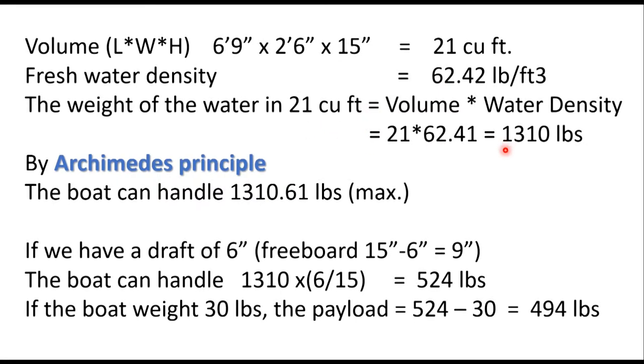By Archimedes principle, the boat can handle 1300 pounds. Assume that structurally that red box can support that much weight. If we have a draft of 6 inches, in this design the freeboard is 9 inches. The boat can handle 1300 pounds times 6 inches over 15 inches, which is the height of the boat, comes up to 524 pounds.